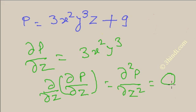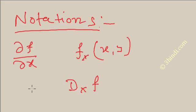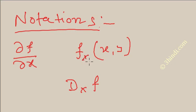Now let's look at the notations of partial differentiation. If f is a function of multiple variables and you want to partially differentiate with respect to x, you can write it as del f by del x, or as f subscript x (with x and y noted), or as d_x f. The meaning is: f is a function of x and y, and putting x indicates partial differentiation of the function with respect to x.